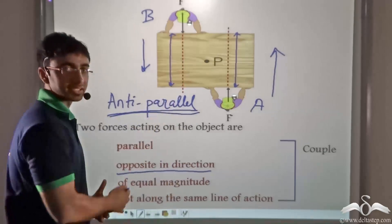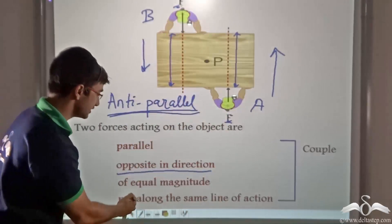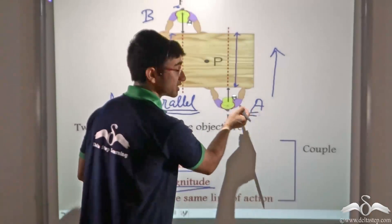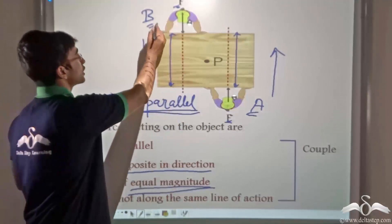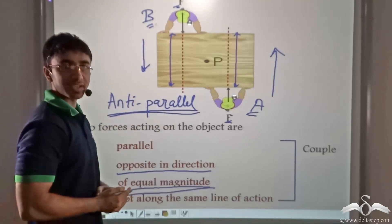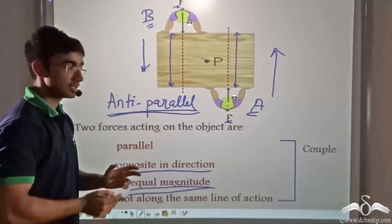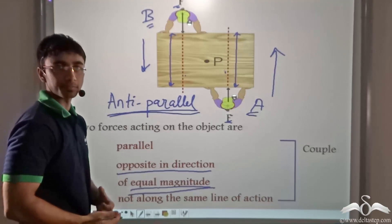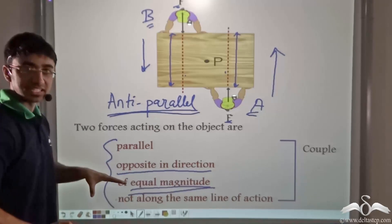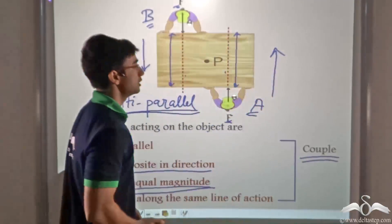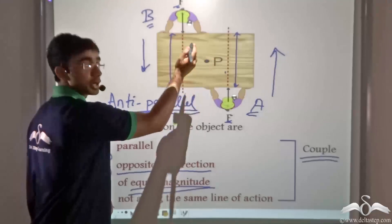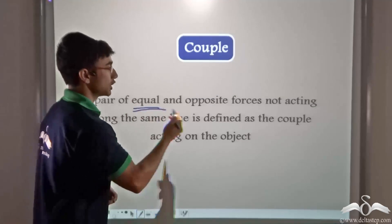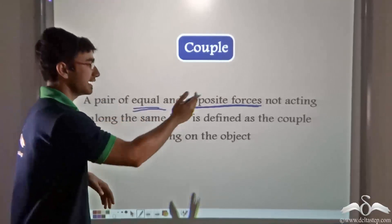Now consider the other characteristics. These forces have the same magnitude — they are of equal magnitude — and they are not along the same line of action. Person A has a constant line of action and person B has a constant line of action, but these lines of action are not the same for both of them. When two forces satisfy these criteria — equal magnitude, opposite direction, and not along the same line of action — we call them a couple. So it was a couple that was rotating the table about point P.